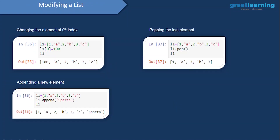Now let's see how we can modify a list. We have a list where initially at index number zero we have the element one. But if I want to change it to some other element, all I have to do is give in the index number and assign a new value to that particular index. Here I am assigning the value of one hundred to that index and I am able to change the value from one to one hundred.